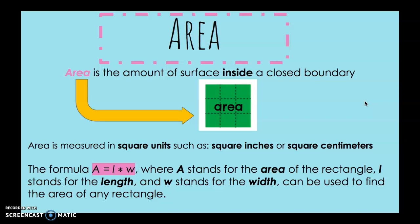The formula area equals length times width, where A stands for the area of the rectangle, L stands for the length, and W stands for the width, can be used to find the area of any rectangle.